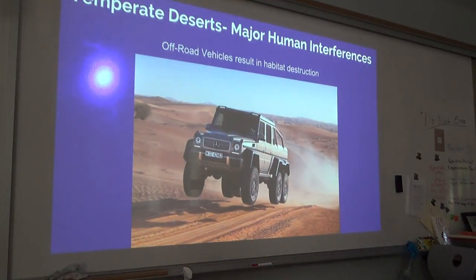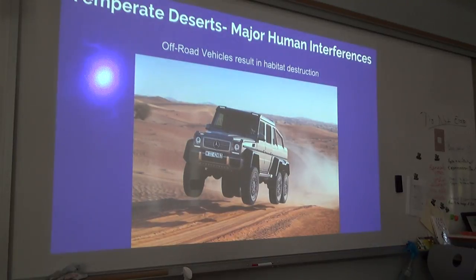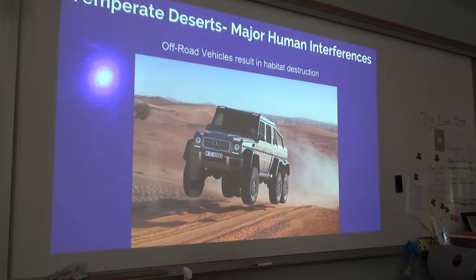The main human interference in temperate deserts is off-road vehicles, because they have a huge impact on the area. They compact the soil, making it more difficult to create habitats, and can also damage the vegetation.